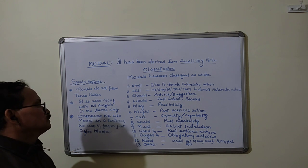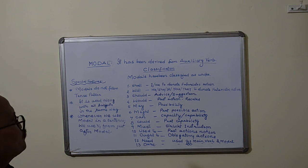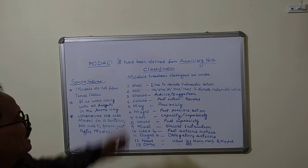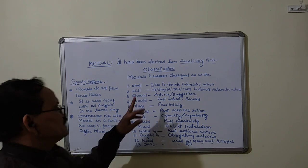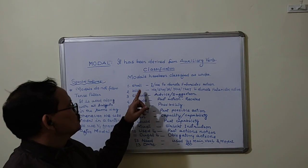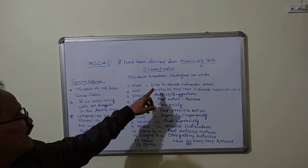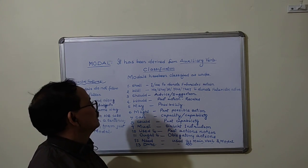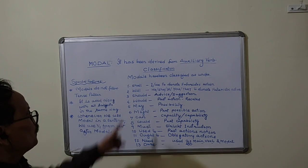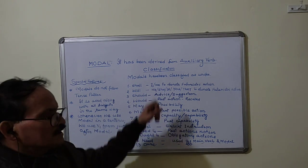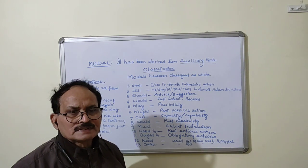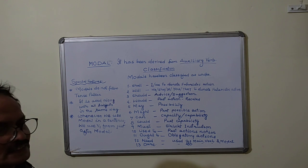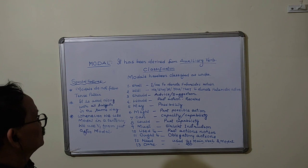Now we have to study regarding the usage of model. Number one is shall. In general term, shall is used along with I and we to denote futuristic action. But when will is used along with I and we, it denotes certain action that is purity of action taken by the subject.